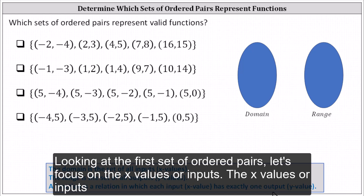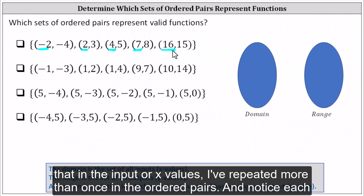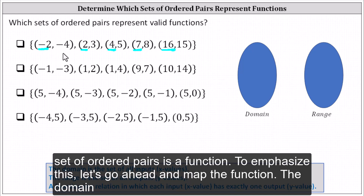Looking at the first set of ordered pairs, let's focus on the x values or inputs. The x values or inputs are negative two, two, four, seven, and 16. Notice none of the inputs or x values are repeated more than once in the ordered pairs, and each has one corresponding output, which is the second value of the ordered pair. Therefore this first set of ordered pairs is a function.